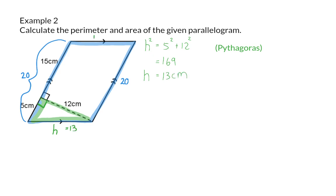And now we can calculate our perimeter. For the perimeter, we have two sides of 20 centimeters and two sides of 13 centimeters. So that will give us 66 centimeters.